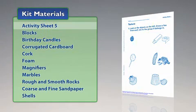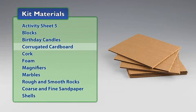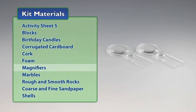You will need the following materials from the kit: Activity Sheet 5, Blocks, Birthday Candles, Corrugated Cardboard, Cork, Foam, and Magnifiers.